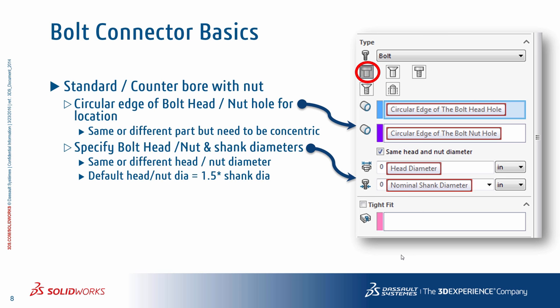For the counter-sink screw option, the basic selection is the conical face for representing the bolt head, and there is no need to specify any head diameter. The thread faces would be the shank contact faces from one or more parts. These faces should be coaxial and can be from multiple parts. The shank diameter should be specified to complete the definition of the counter-sink screw connection.